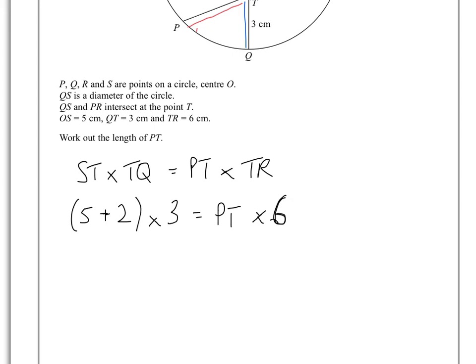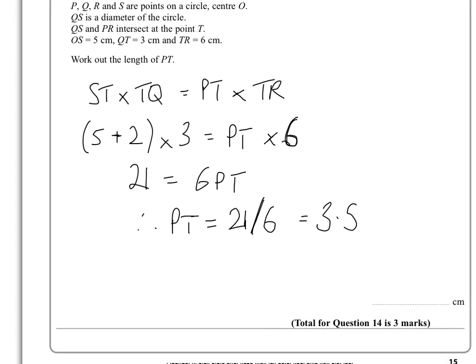So 5 plus 2 is 7 times 3 is 21, equals 6PT. Therefore, PT equals 21 over 6, and that equals 3.5. So that means that length PT is 3.5.